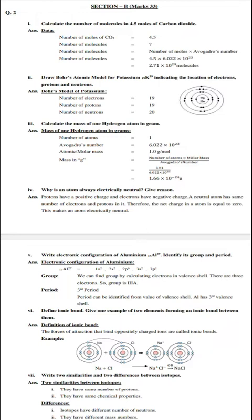Question number 2: Draw Bohr's atomic model for potassium indicating the location of electrons, protons and neutrons. Simply we have to draw Bohr model for potassium and indicate the locations of electrons, protons, neutrons. First we will write number of electrons, protons and neutrons.